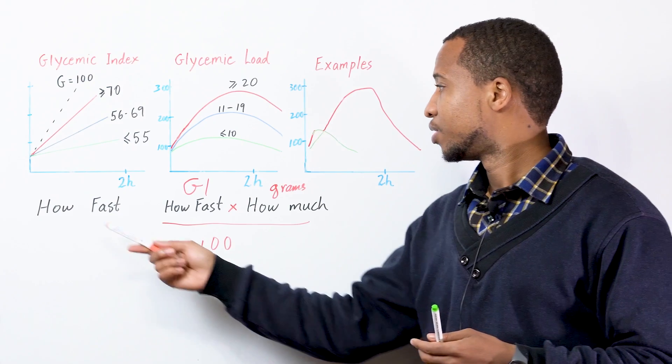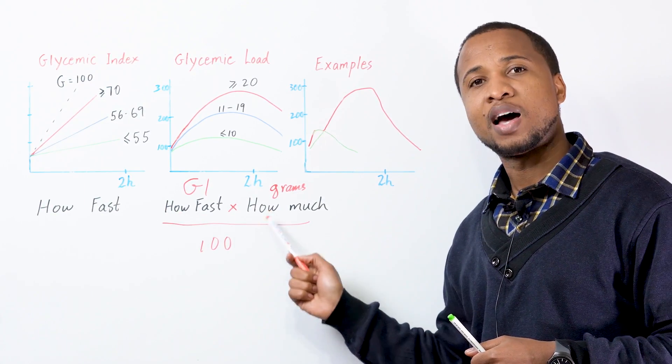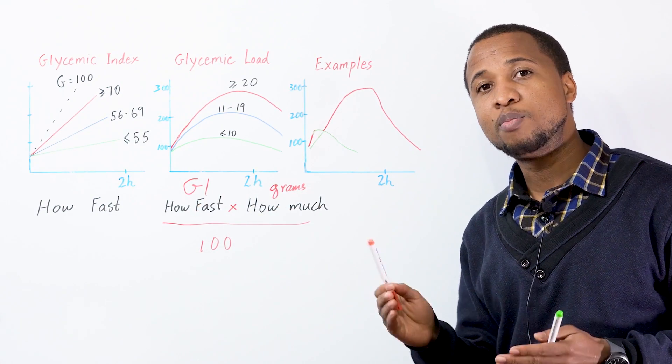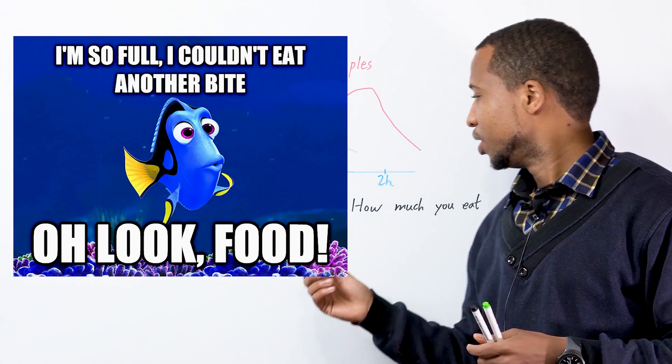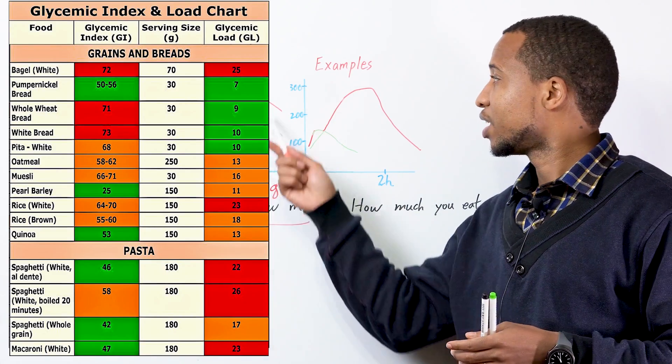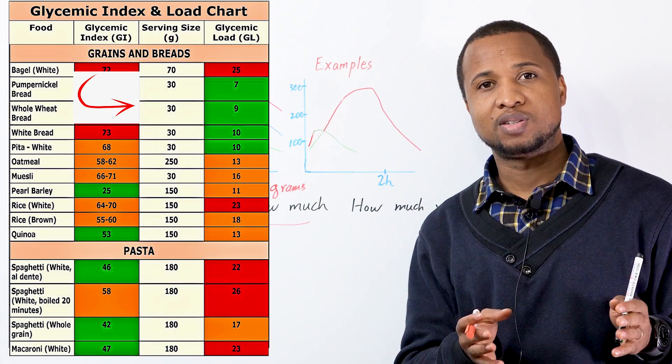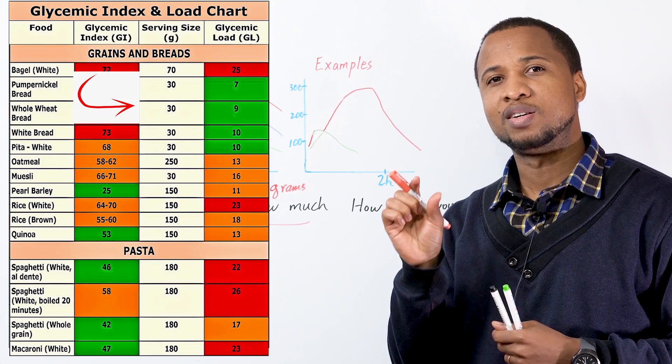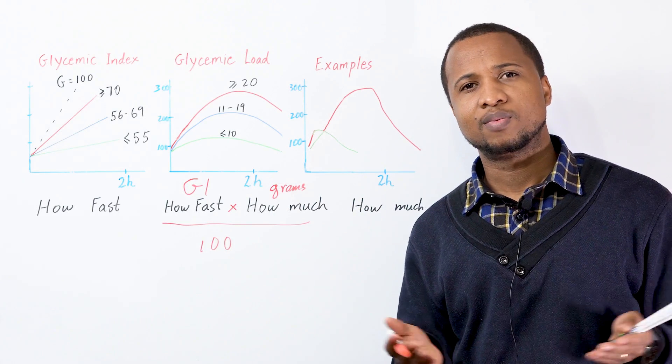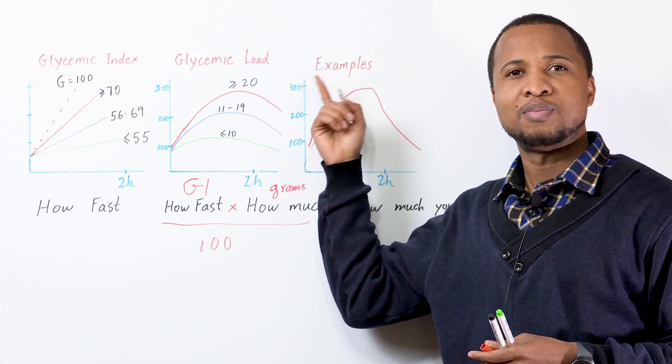Now, there's one more thing to consider. We went from how fast to how fast times how many grams in that food. We should add one more thing, how much you eat. Because if you look at bread, right, on that table, it looks like the glycemic load of bread is pretty low. But look at the grams. They're talking about 30 grams of bread. Now, who eats 30 grams of bread? A lot of people eat like 200-300 grams of bread. So, it is 7 times 10.